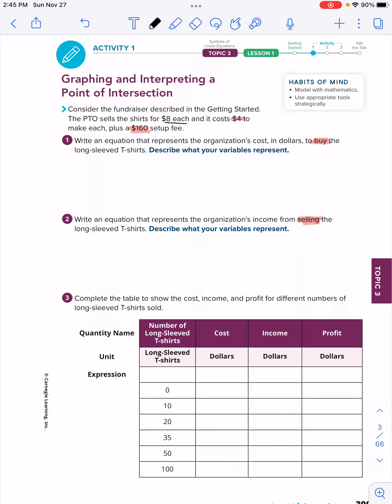Number one says write an equation that represents the organization's cost in dollars to buy the long sleeve t-shirts. When we write an equation, we have to figure out what form we're writing it in. This will be slope intercept form, y equals mx plus b. Since we're buying the shirts, where we begin is the 160, that's the setup fee. Our m value is $4 per shirt. So this is the equation y equals 4x plus 160, where we have $4 per shirt in order to buy, and this is where we begin.